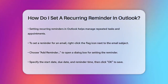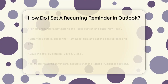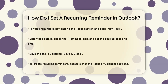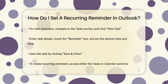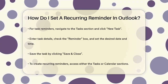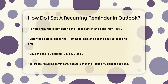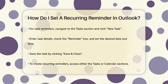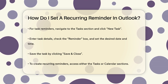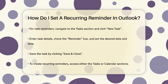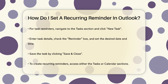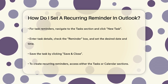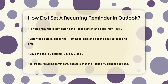Now if you need to set a reminder for a task, it's just as easy. Open Outlook and go to the Tasks section. Click New Task and enter the task details. Check the Reminder box and select the date and time you want the reminder to pop up. Click Save and Close to save the task with the reminder.